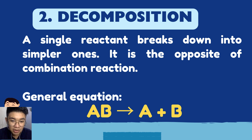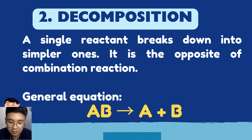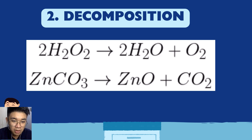To use an analogy: combination is like two people getting together, while decomposition is like that pair breaking up and separating. Let's go to the examples. Hydrogen peroxide (H2O2) — your agwa oxinada used to clean wounds: 2H2O2 → 2H2O + O2 (water and oxygen gas).